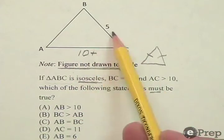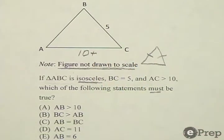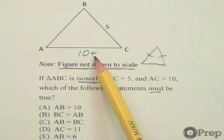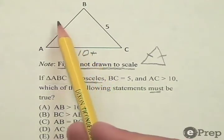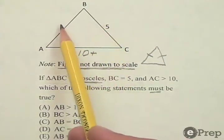Now, I have already figured out that these two can't be the sides that are congruent, because this one's 5 and this one's greater than 10. So it's either going to be these two that are both greater than 10, or these two that are both 5.